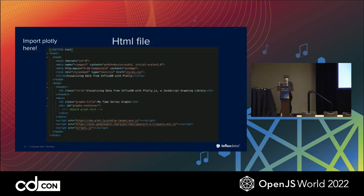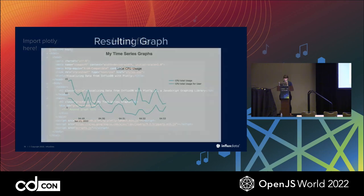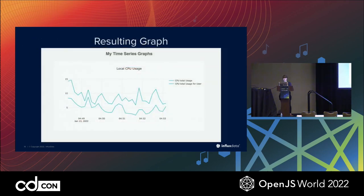Specifically in the HTML, we're importing Plotly. You could also import Plotly in your package.json file — you don't have to do it this way. And this is the resulting graph that you would have. You have your CPU total usage and then total usage for your exact user. As you can see, they're slightly different, and this is over the time scale.